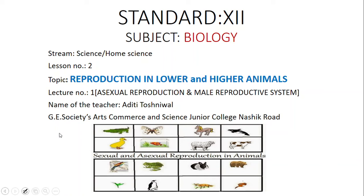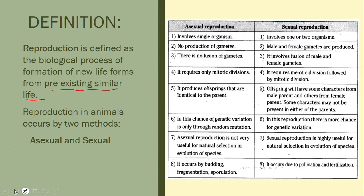Hello students, today we will be dealing with lesson number two: reproduction in lower and higher animals. In detail we will be studying about asexual reproduction and the male reproductive system. Reproduction is defined as the biological process of formation of new life forms from pre-existing similar forms. It is a very important phenomenon for the continuity of the species.